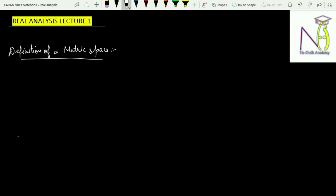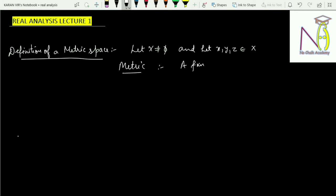Let X be any non-empty set and let x, y, z be any three arbitrary elements from the set X. A metric is basically a function d which is defined from X cross X — that is a Cartesian product — to the set of reals R, or we can write R positive here.